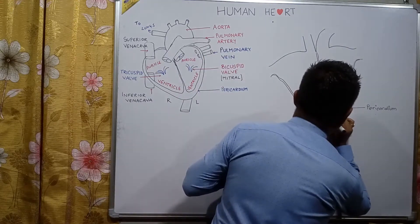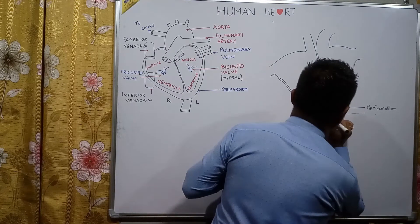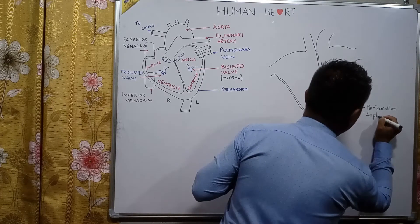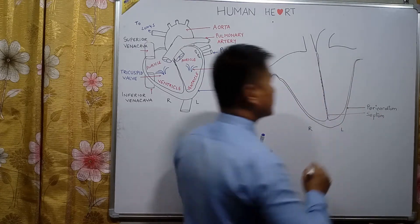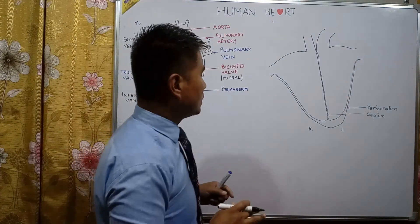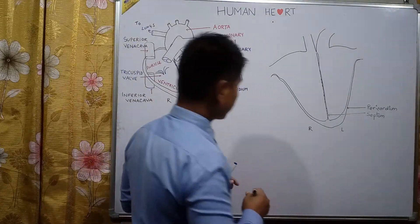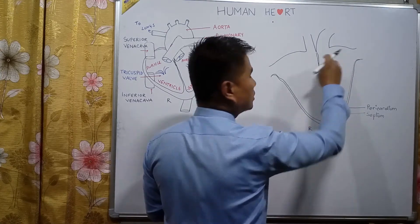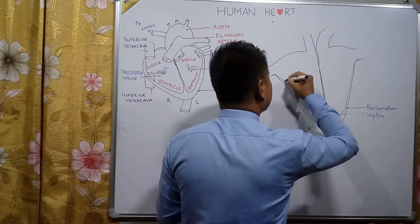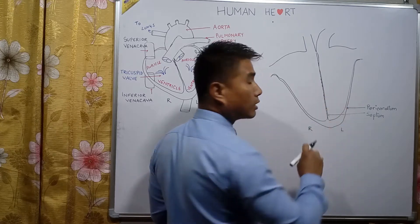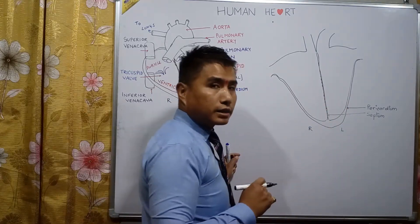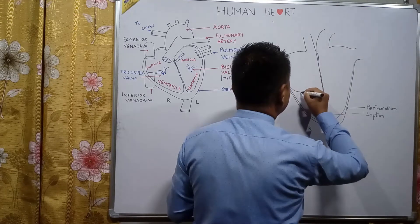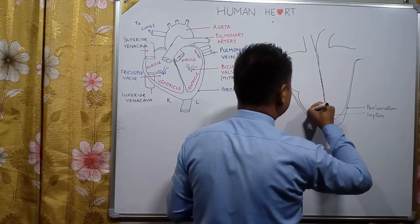This is known as the septum. The upper portions are known as auricles, and the lower chambers are known as ventricles. Let us draw the auricles and the ventricles.